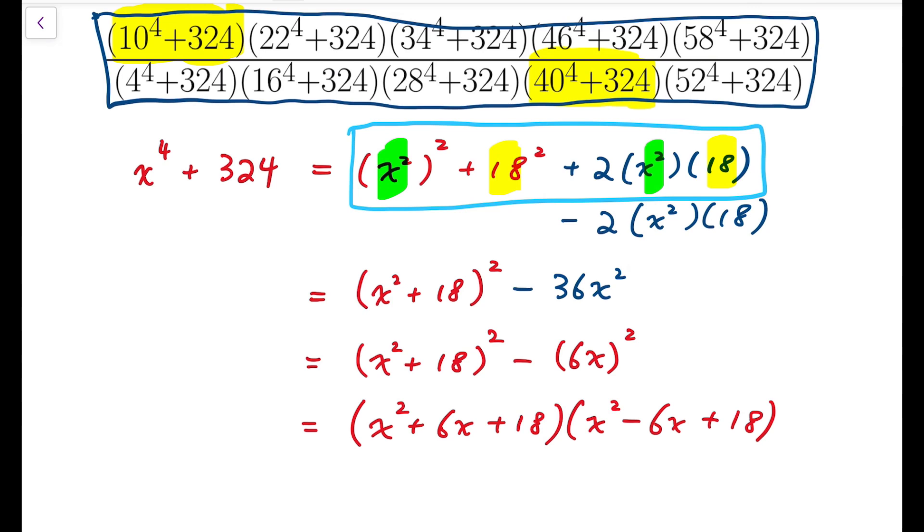So the trick is that I'm going to rewrite the product into x plus 3 all squared plus 9, all multiplied by x minus 3 all squared plus 9. So then, all the terms in both numerator and denominator will be of the form some number squared plus 9.